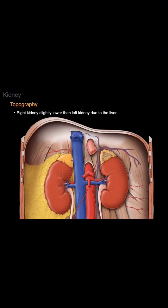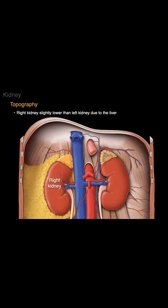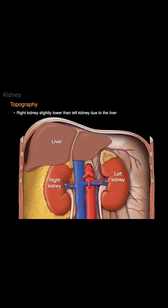On the concave side of the kidney, there is a depression known as the renal hilum. This is where the renal artery, renal vein, and ureter enter and exit the kidney.